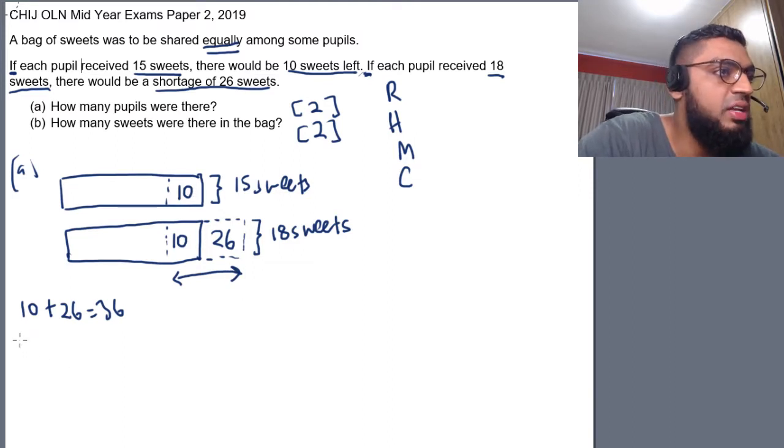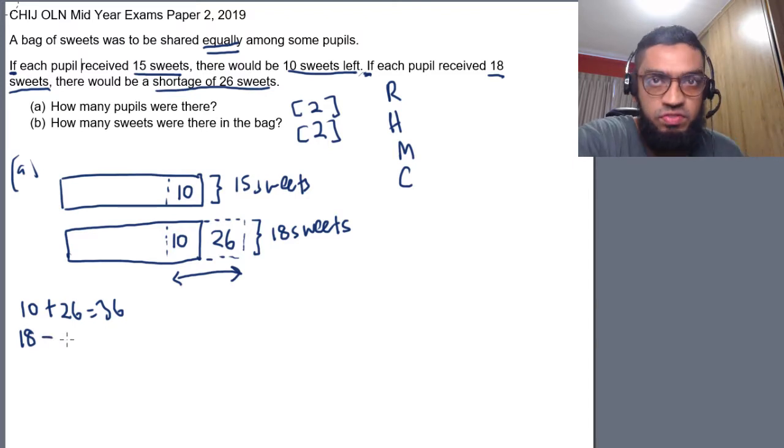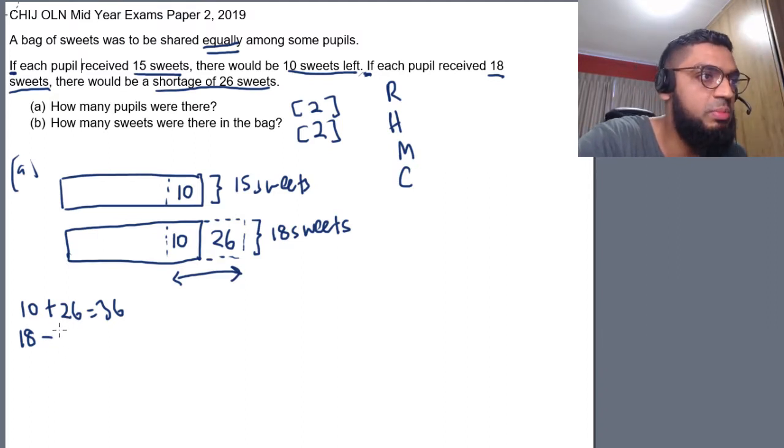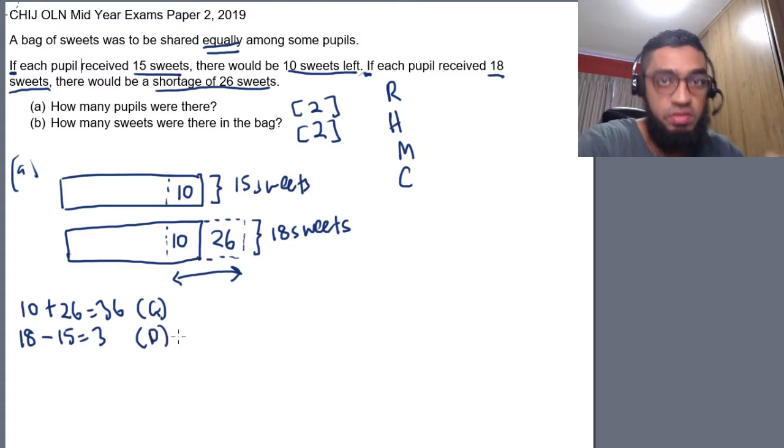And find the difference between the two number of sweets. So, first is if I give 15, second is if I give 18. So, what is the difference there? 18 minus away 15. That will give me 3. So, first one, find the gap between the first and the second case. And the second step, find the difference. So, that's why this is called gaps and differences.